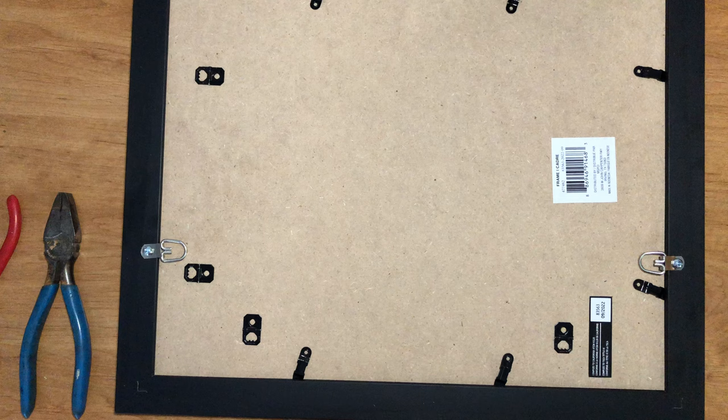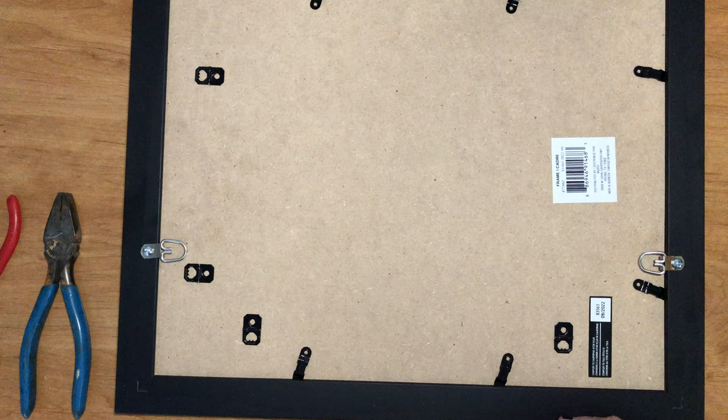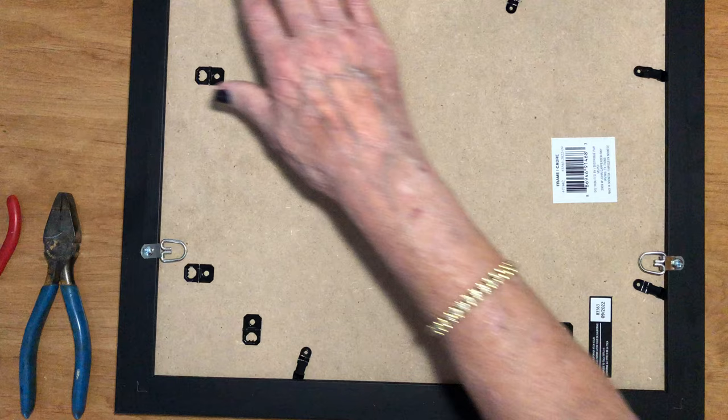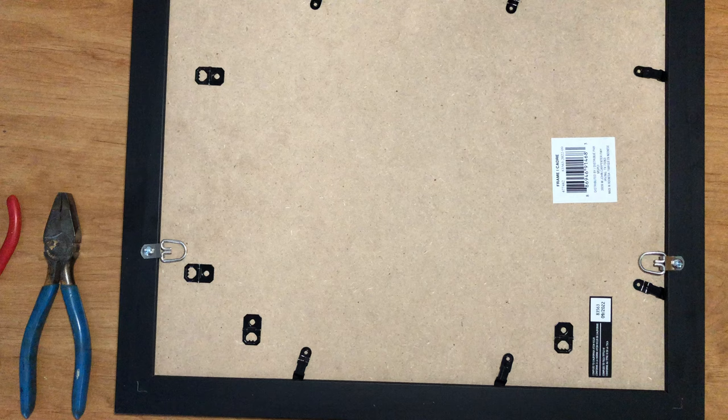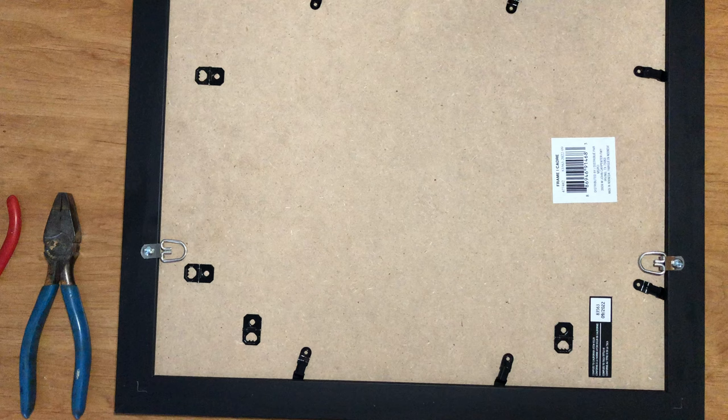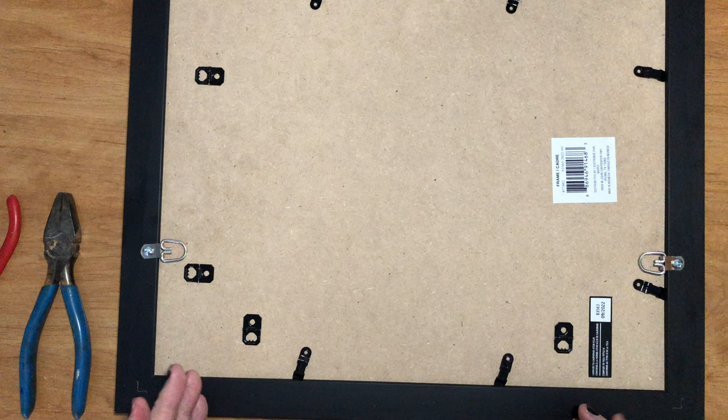If I don't use the d-rings, then I use the sawtooth. This is the top of the frame, of course this would be the bottom then. What I do here is I put felt pads, double-sided felt pads on the corners to keep it from being right up against the wall to let it breathe. So this is glass underneath with the mat, with the artwork, the backboard, and then the back of the frame.